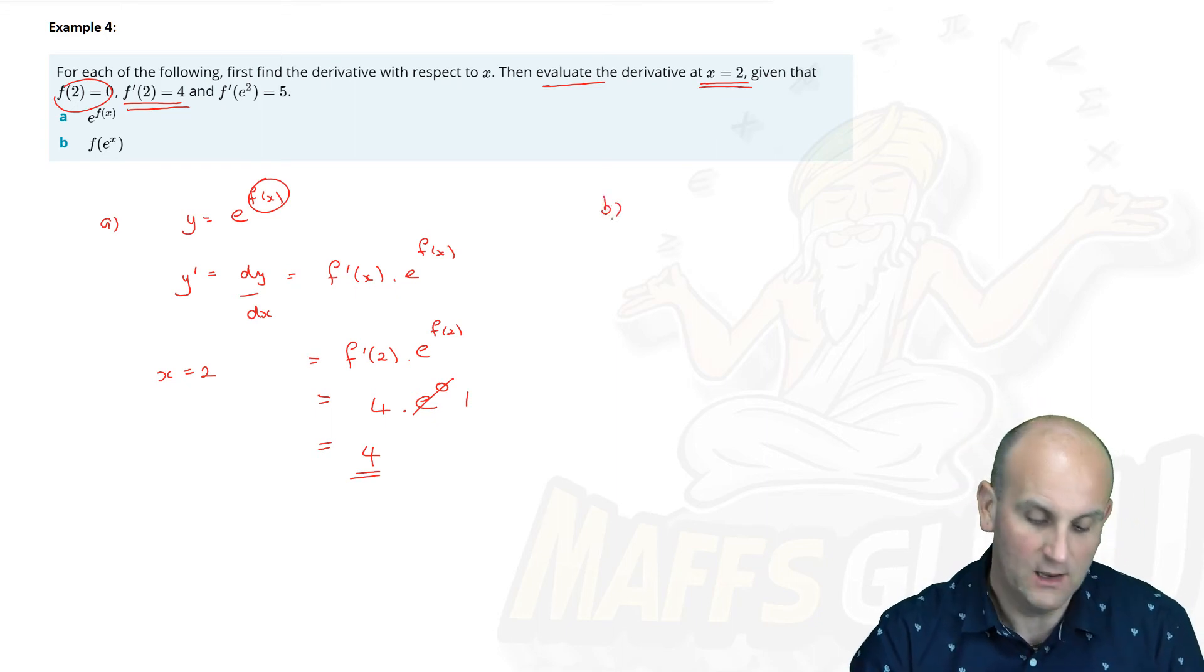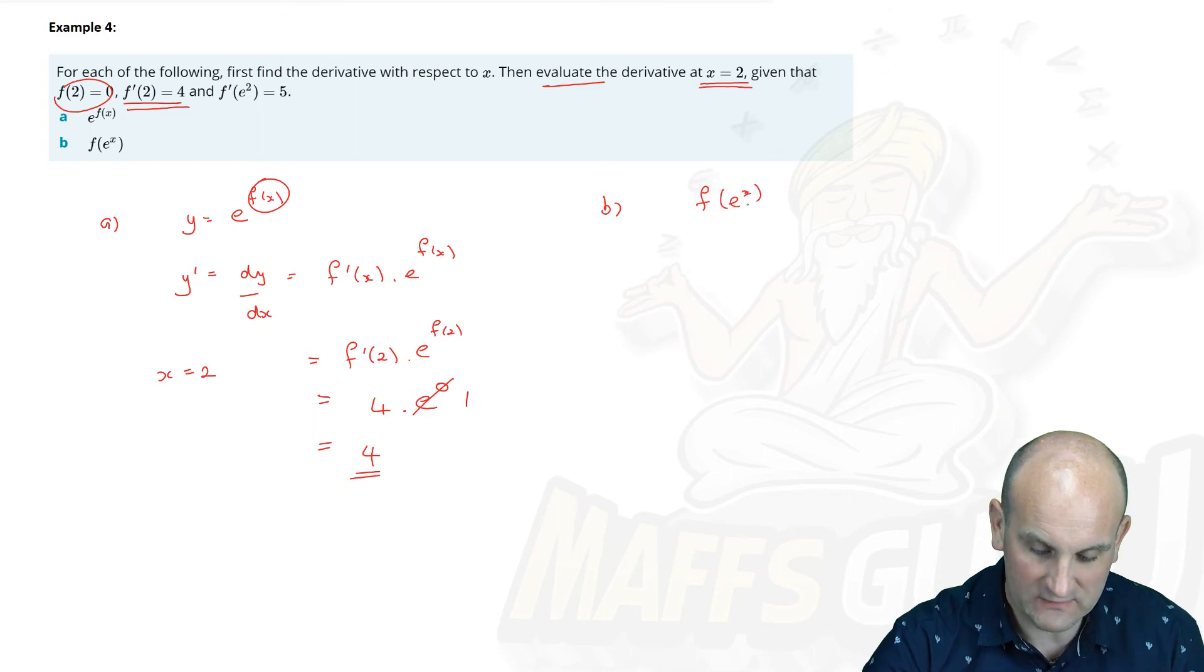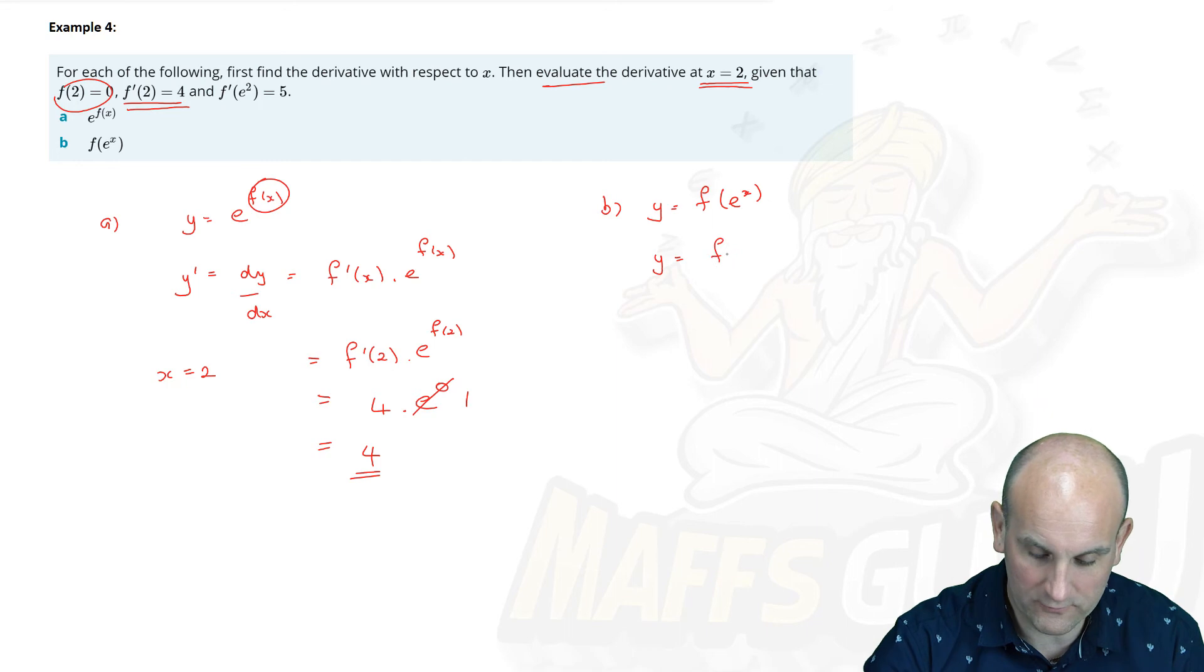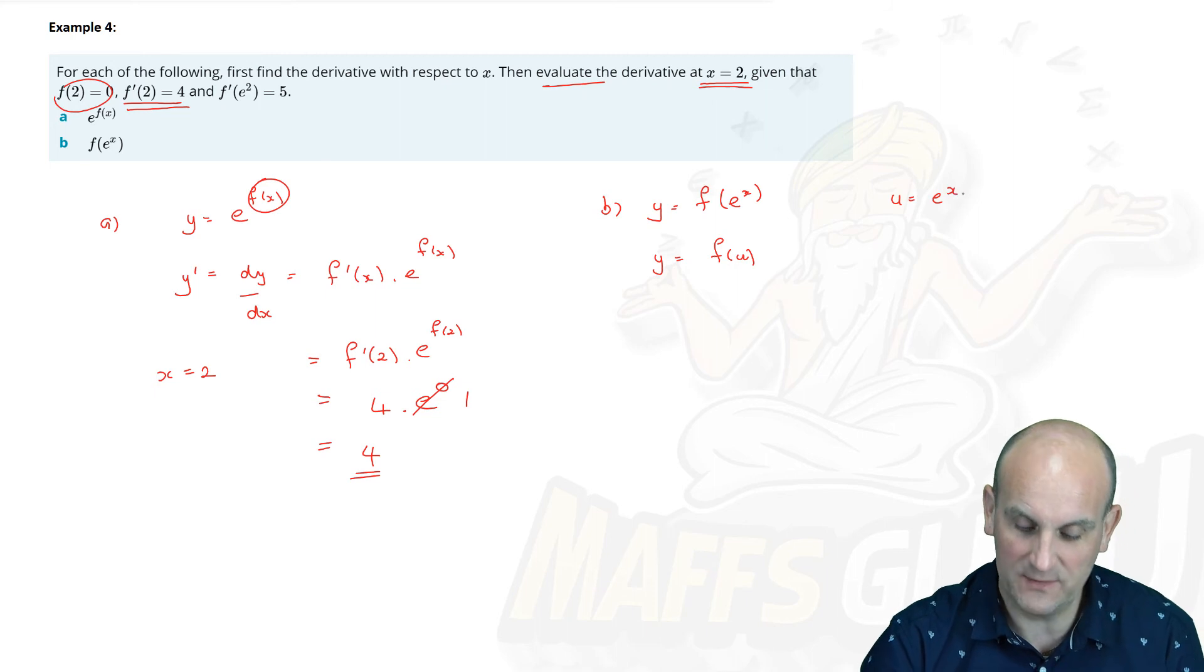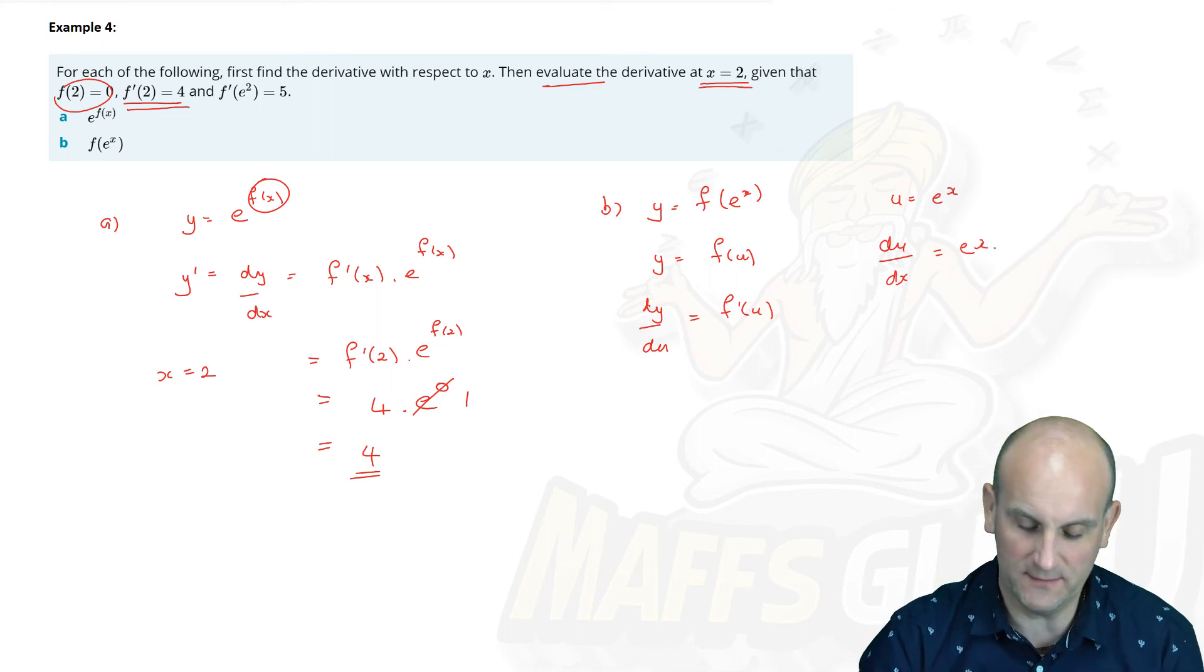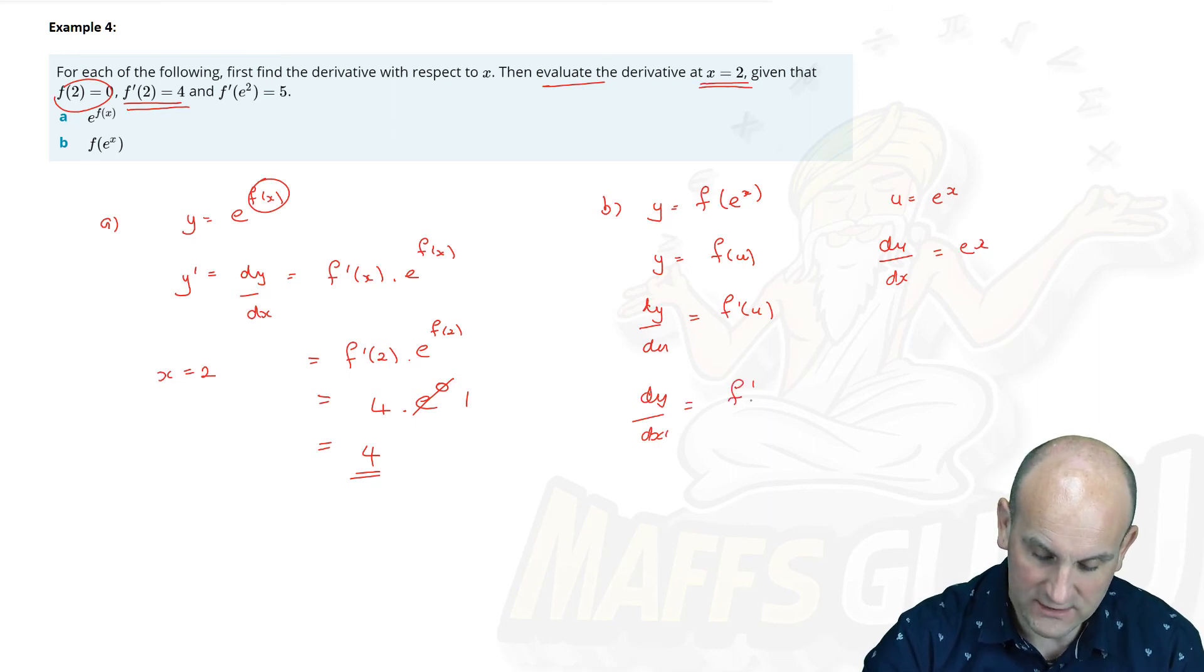And part B, we now have f(e^x). Now again, this is a standard trick question. Remember, when it looks complicated, take it outside. So I'm now going to say, well, let y equals f(u). I can do that. Thank you very much. And let u equals e^x. So dy/du now becomes f'(u). And we know that du/dx is equal to, oh, e^x. Oh, thank you very much. So we now know that dy/dx becomes equal to f'(u), which we know is e^x, multiplied by du/dx, which is e^x. And again, they're looking for us to evaluate when the value of x equals 2. So now using x equals 2...